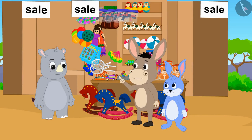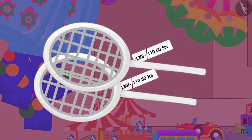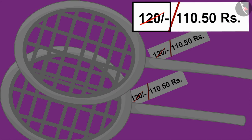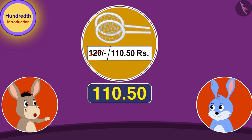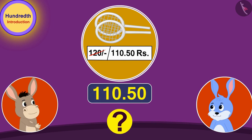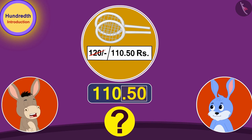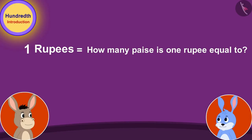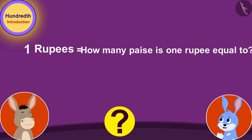Bhola wants to buy a new badminton racket. The new price, 110.50 rupees, has been written on this badminton racket by striking out the old price. Bunny, what kind of price is this? I understood 110 rupees, but how will we give this point 50 rupees? Bhola asked Bunny.